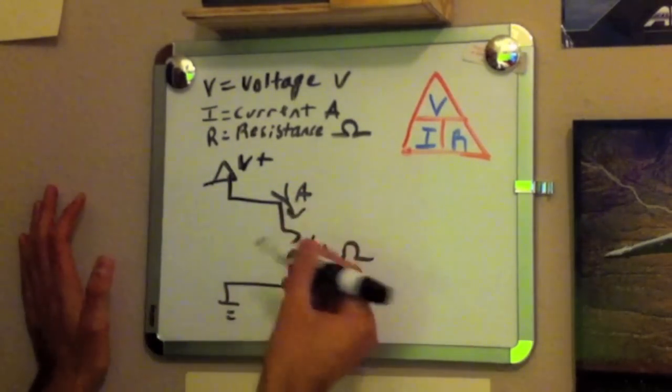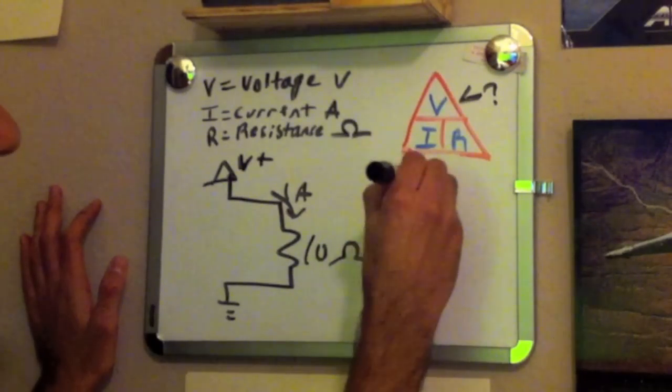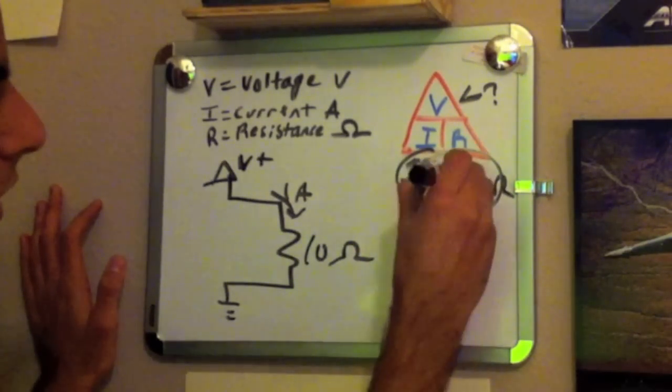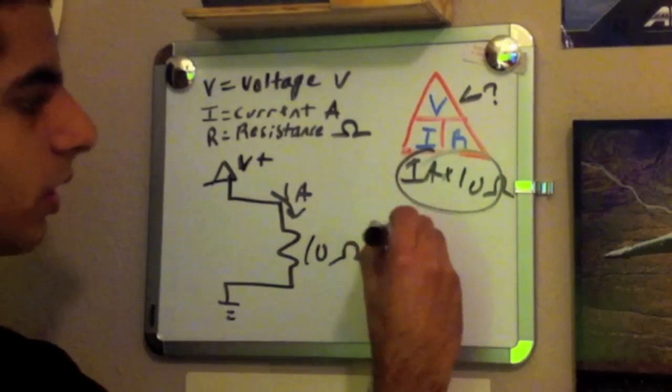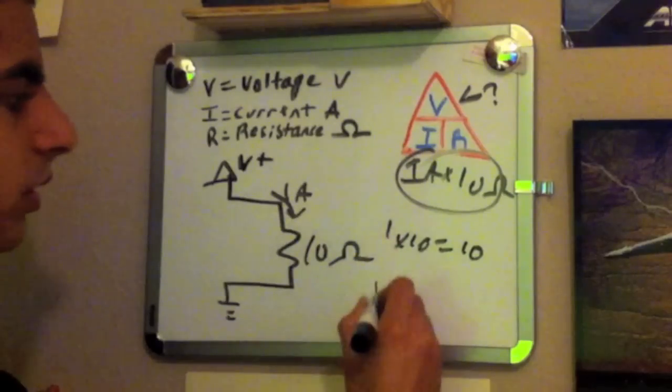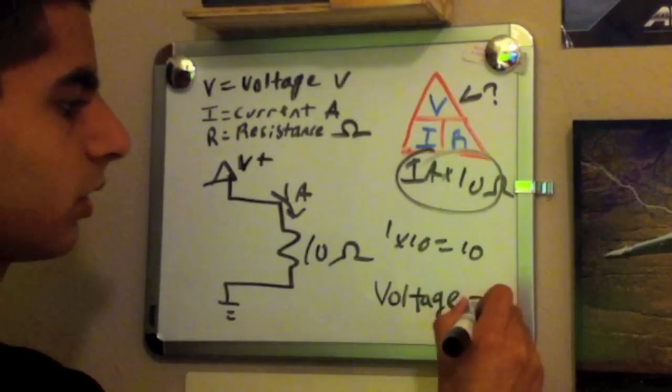And again, we would simply, if we want to find voltage, we knew this was 1 amp, and we knew resistance was 10 ohms, we just multiplied the two, and 1 times 10 equals 10. So, we know our voltage equals 10 volts.